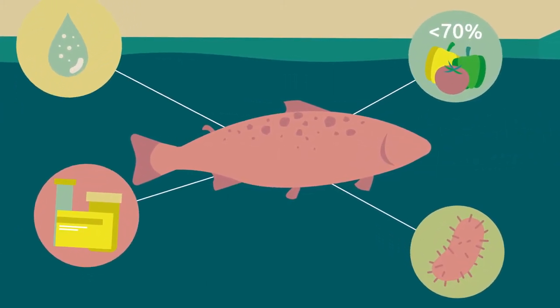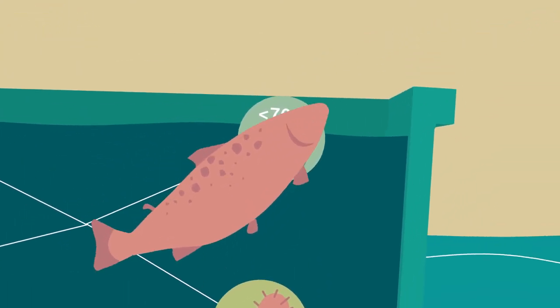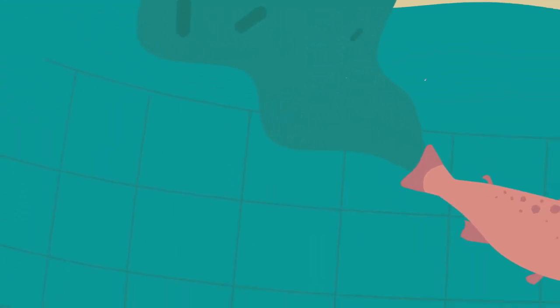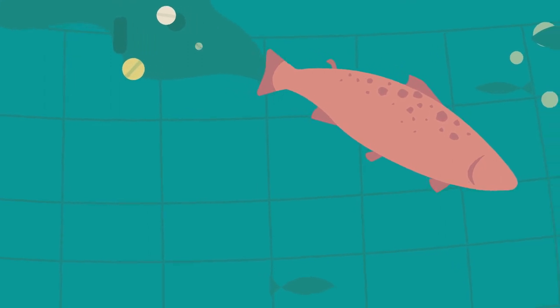Farmed salmon is not that robust and often needs medication. Additionally, as they are mainly raised in cages in the open oceans, diseases as well as nutrients and antibiotics can spread in the surrounding waters.